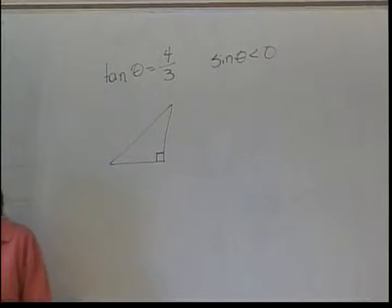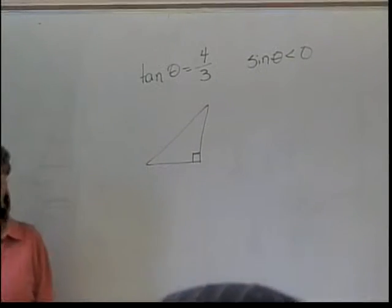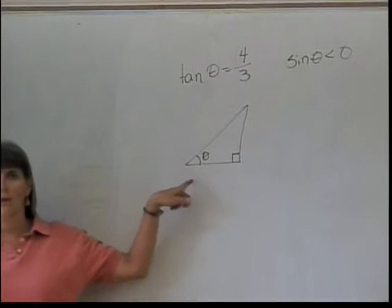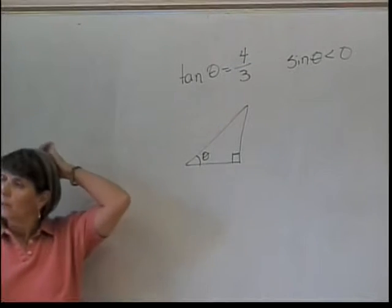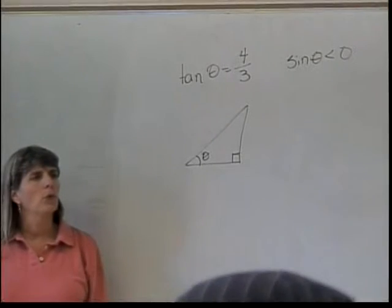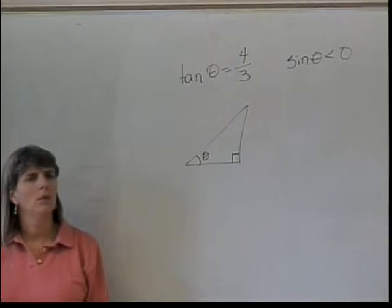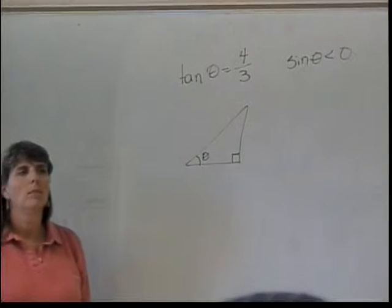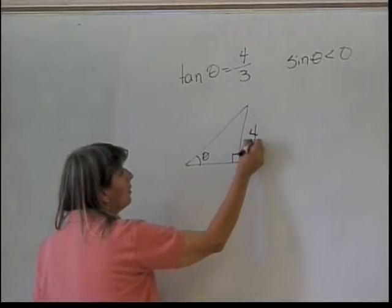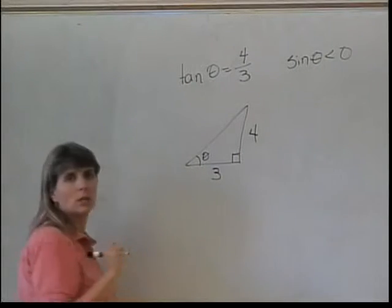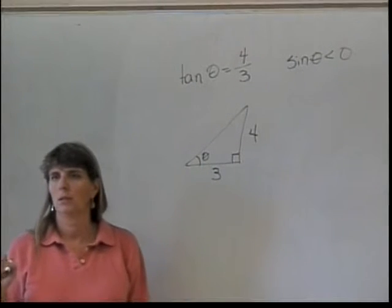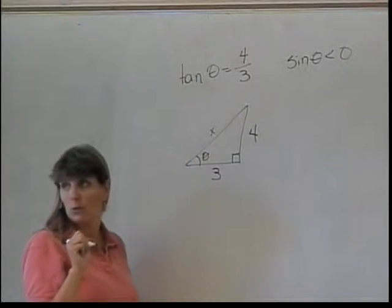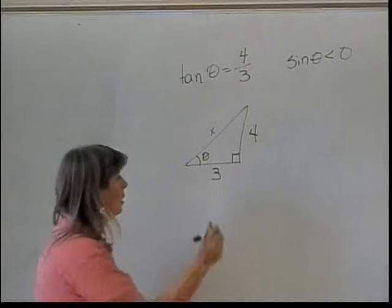So I know that the tangent of theta equals four-thirds, and that the sine of theta is less than zero. So here's my triangle. Where do you want to put my angle theta? Bottom left. Okay. By the way, you must label your angle in the triangle — that's one of the things you have to remember to do. What do I do with four-thirds? Four is the opposite, three is the adjacent. The thing I don't know is my hypotenuse, so I need to find it in order to answer my questions.